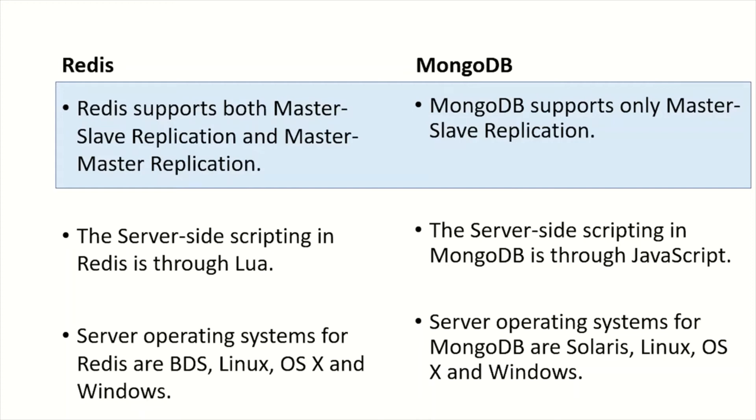There is no master-master replication in MongoDB. In master-master replication, the same data will be persisted or replicated in multiple master nodes.